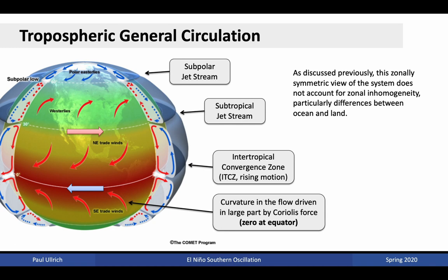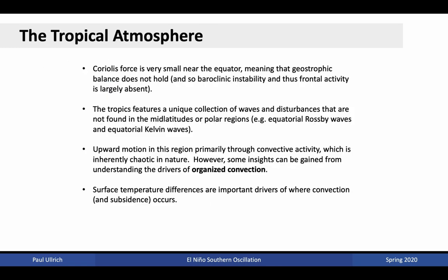In particular, this zonally symmetric image does not account for differences between ocean and land, of which there is significant variation in the zonal direction. In the tropical atmosphere, Coriolis force is very small. This means that geostrophic balance does not hold, so all of the analysis relevant for the subtropics and mid-latitudes does not immediately apply here, and an alternative analysis is necessary. This also means that baroclinic instability, and thus frontal activity, is largely absent. The tropics instead features a unique collection of waves and disturbances not really found in the mid-latitudes or polar regions.